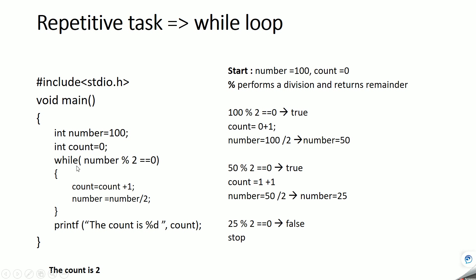This is how the while loop works. These two lines of code were getting executed when the condition was true. Once the condition became false, the control came out of the loop and printed the result. The control keeps looping back to the condition — that's why we call it a loop.